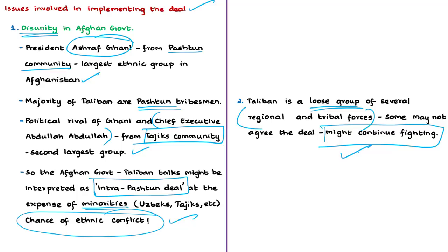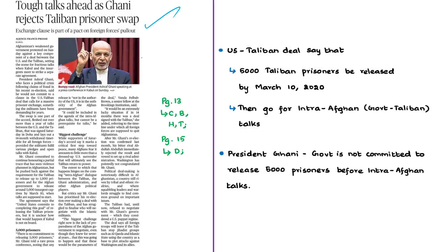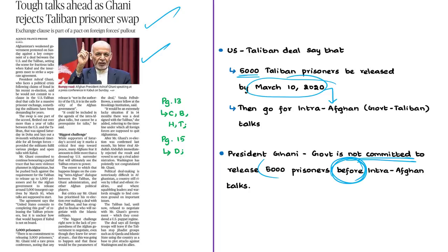Another issue involves the exchange of prisoners. The deal requires the release of 5,000 Taliban prisoners by March 10. After this, intra-Afghan talks between the government and the Taliban would start. However, Afghan President Ashraf Ghani has said his government is not committed to releasing 5,000 prisoners before the intra-Afghan talks, making implementation of the deal more difficult.